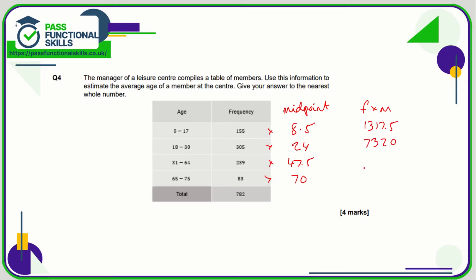Now frequency times by midpoint: 155 times 8.5 is 1317.5, 7320, 11352.5, and finally 5810. And we're going to add these frequency times midpoint numbers together, I'm going to get a total of 25,800.